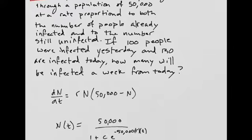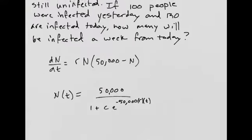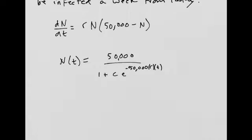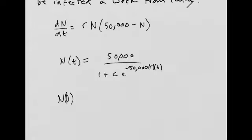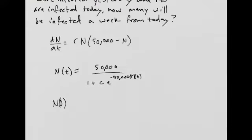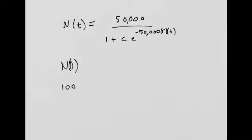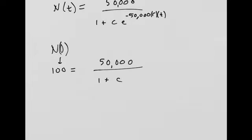But I also know that n sub 0, if 100 people were infected yesterday, we're considering yesterday to be n sub 0. So N(0) is the same thing as 100. And that's when I plug in 0. So I get 50,000. This is how I can find my c value. Because if I plug in t being 0, then this is just 1 plus c. And I can solve for c.